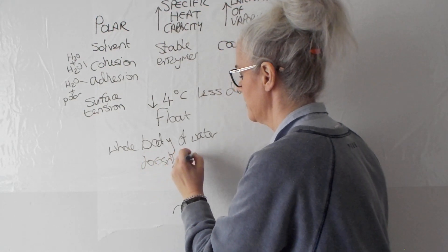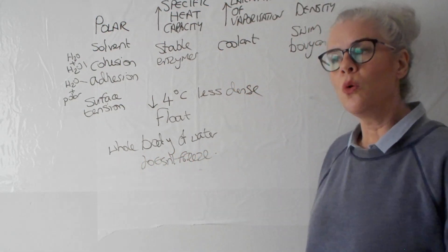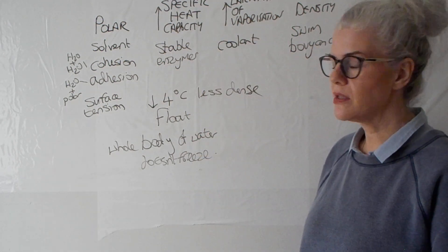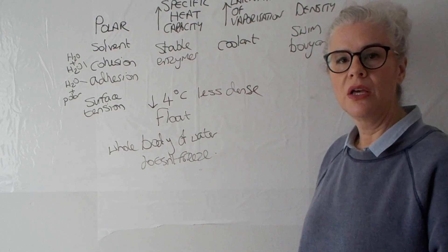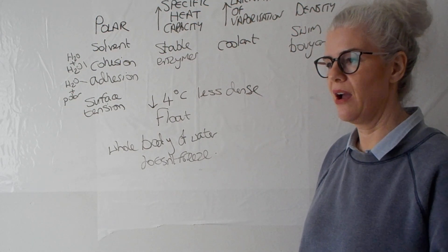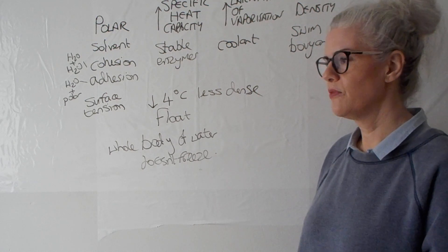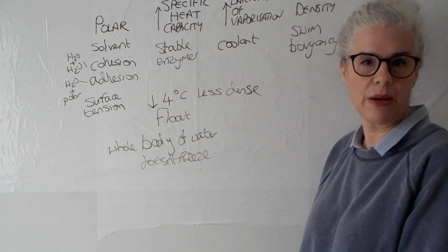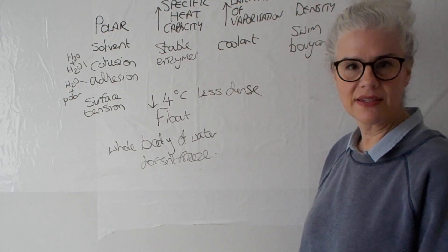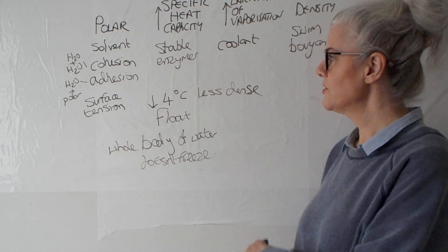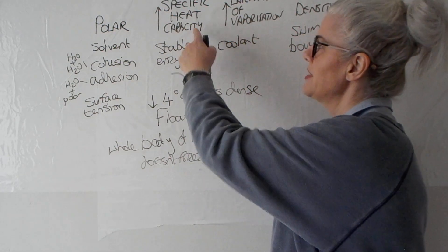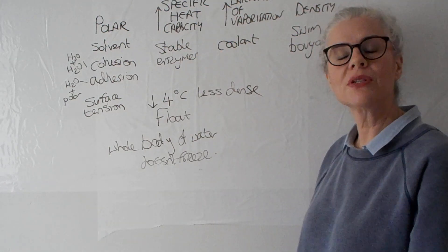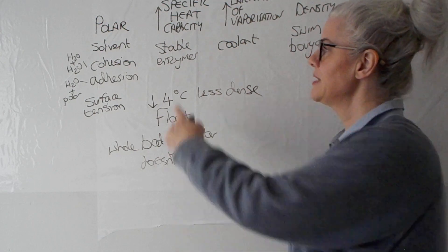Whenever you get questions about water, you can talk about all of these different things, but you must relate it to the question. Sometimes they talk about how the properties of water lead it to be a good solvent, or how it's a good habitat, or how it aids survival. You've always got to relate it. So aiding survival, for example: if you just said it had a high specific heat capacity, which means it's stable—so what? How does that actually help with the survival of the animals?